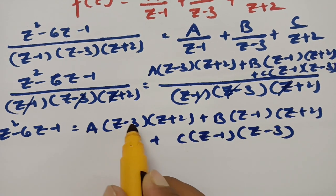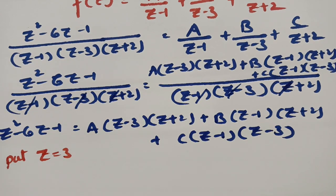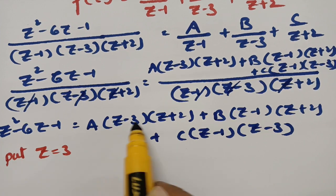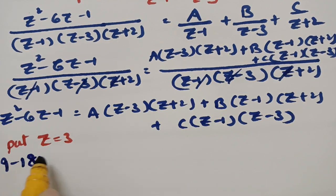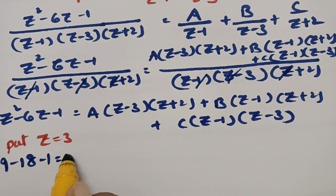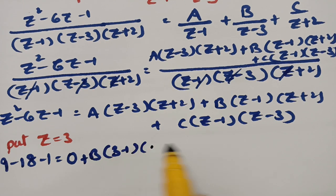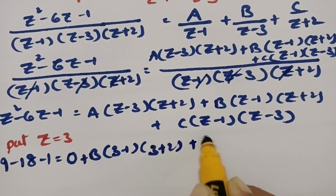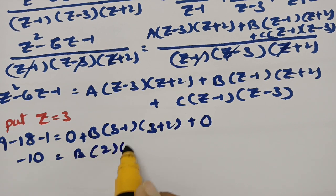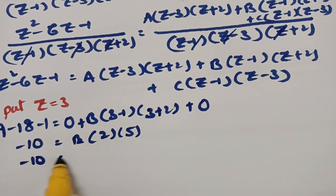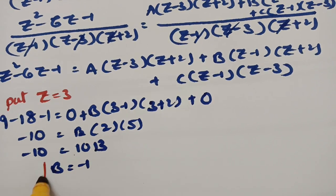Put z = 3. Then the A and C terms vanish, leaving 9 − 18 − 1 = B(3−1)(3+2), which gives −10 = B × 2 × 5 = 10B. Therefore B = −1.